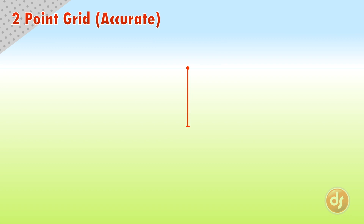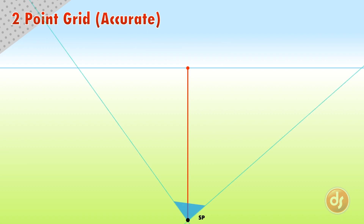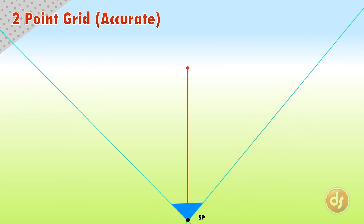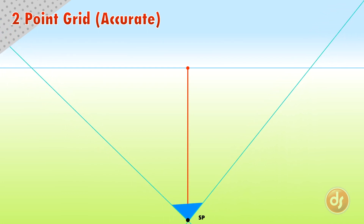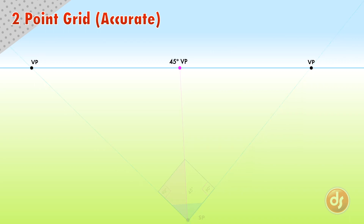To make an accurate two-point grid, start with a horizon line and then choose a station point by bringing a vertical line down from the horizon. Remember, this represents where the viewer of the image is standing, so make it as far below the horizon as you can to make a less distorted grid. From the bottom of the station point, we will use a large right angle to pick where we want our vanishing points — these can be anywhere we like, as long as they are chosen on a right angle pivoting from the station point. Using the 45-degree principle, if we cut the right angle in half and draw a line to the horizon, we get our 45-degree vanishing point.